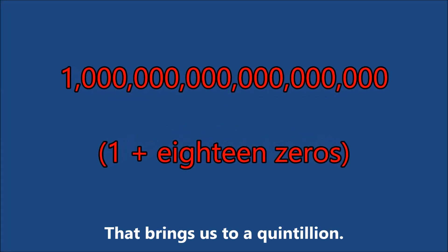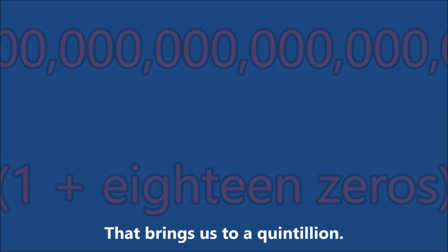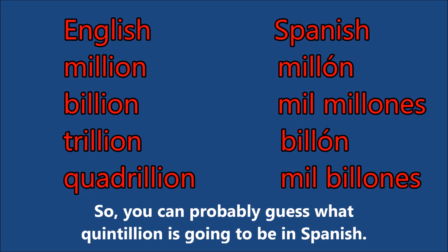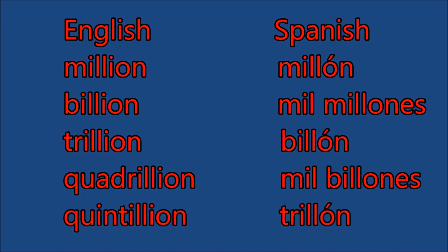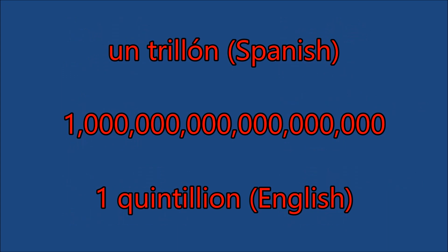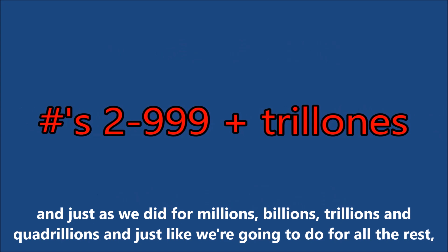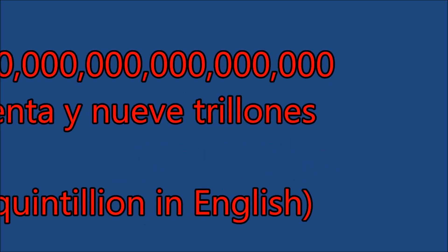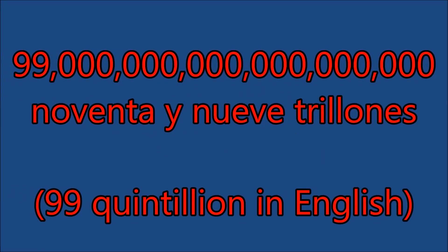That brings us to a quintillion. We're going to continue to follow the same pattern as we go, so you can probably guess what quintillion is going to be in Spanish. Sure enough, a quintillion in Spanish is un trillón. And just as we did for millions, billions, trillions, and quadrillions — and just like we're going to do for all the rest — we're going to put the numbers 2 through 999 before trillones. An example: 99 quintillion would be noventa y nueve trillones.